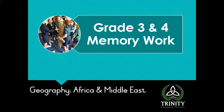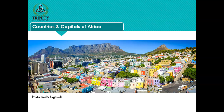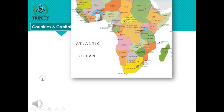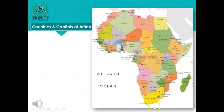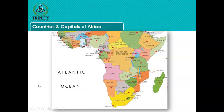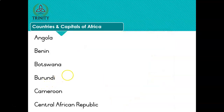Hello children. We're busy with our memory work for Geography - we've been learning the countries and capitals of Africa. In this part we are going to revise those and I just want you to see a map of Africa so that you can see that you now know the countries and capitals of the entire African continent. We just added the northern part of Africa last time. For now we're going to do A to Z of the countries, then look at North Africa, and then add countries and capitals of the Middle East.